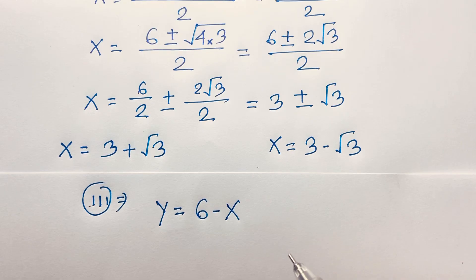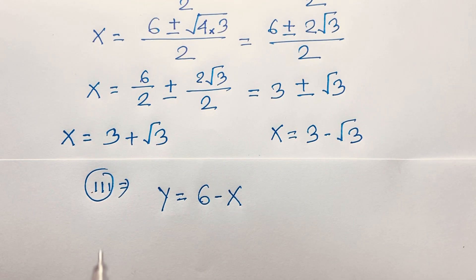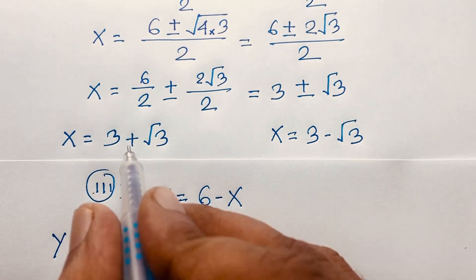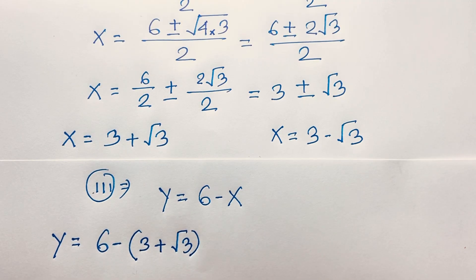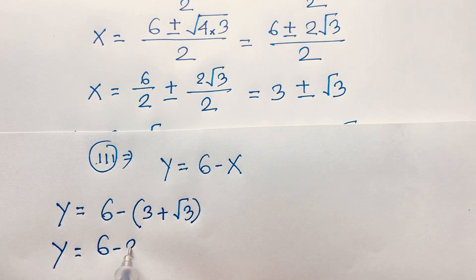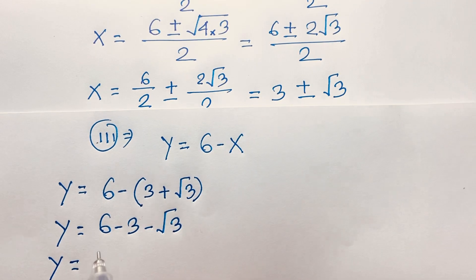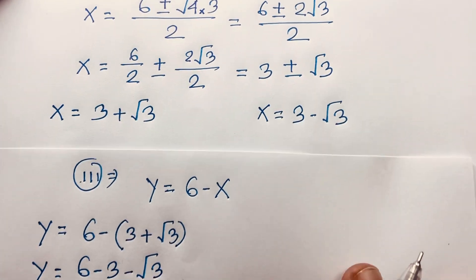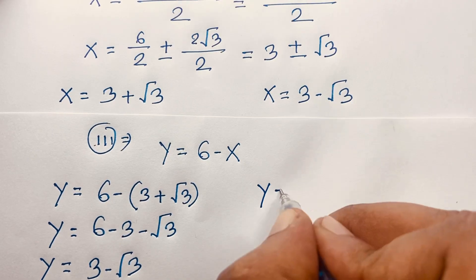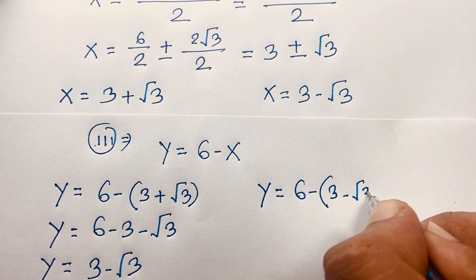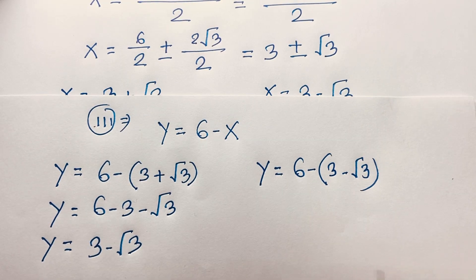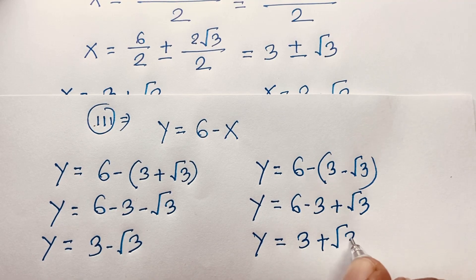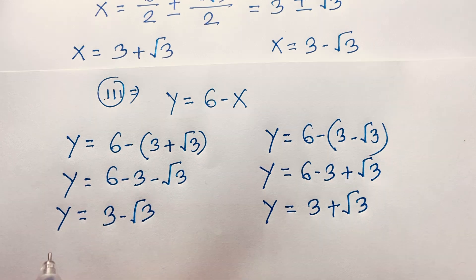Now our target is to find y. Our third equation is y equals 6 minus x. When x equals 3 plus square root 3, y equals 6 minus (3 plus root 3), which gives y equals 3 minus square root 3. And when x equals 3 minus square root 3, y equals 6 minus (3 minus root 3) — the double negative becomes positive — so y equals 3 plus square root 3.